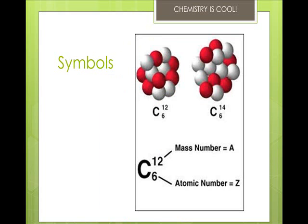The symbols for elements contain the symbol of the element, the mass number, and the atomic number. When naming isotopes, you put the mass number after the name of the element, such as carbon-14 in this picture.